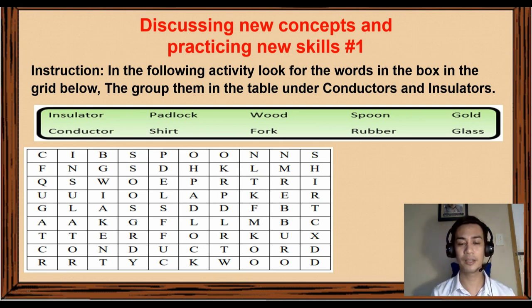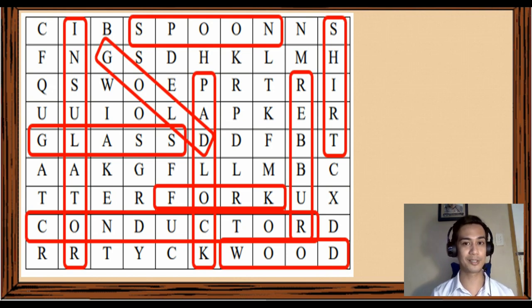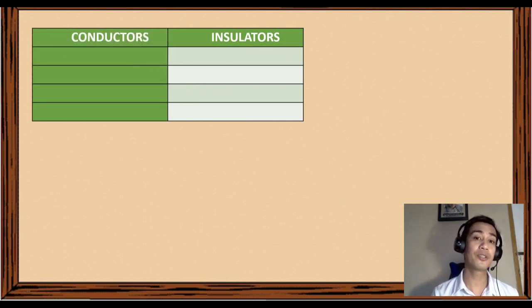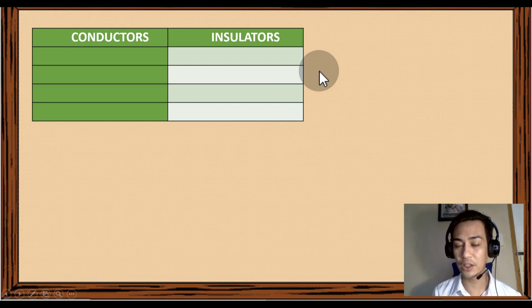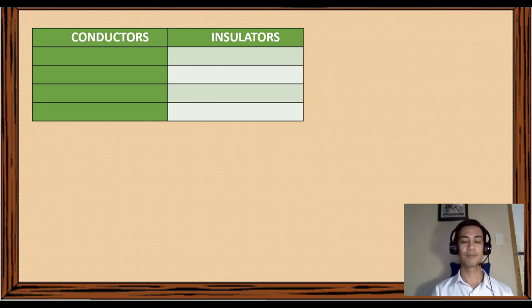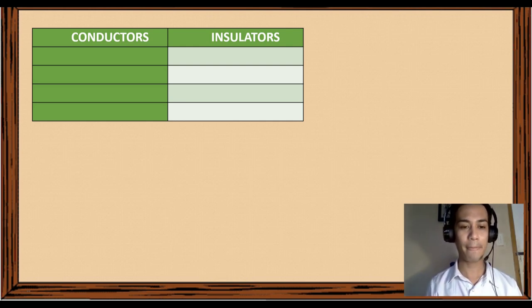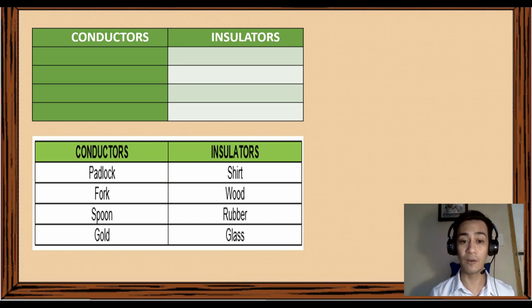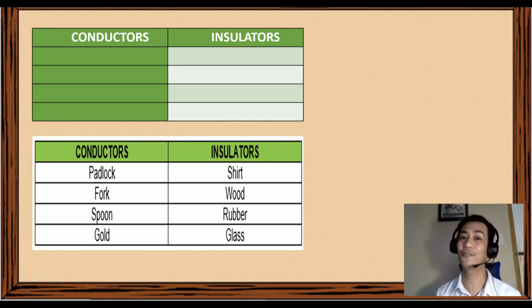Let's see the answers — find out if you got them correct. You can pause the video while checking; make sure honesty is the best policy. The conductors are: padlock, fork, spoon, and gold. Under insulators: shirt, wood, rubber, and glass. If you got all the correct answers, give yourself three claps — one, two, three! Very good!